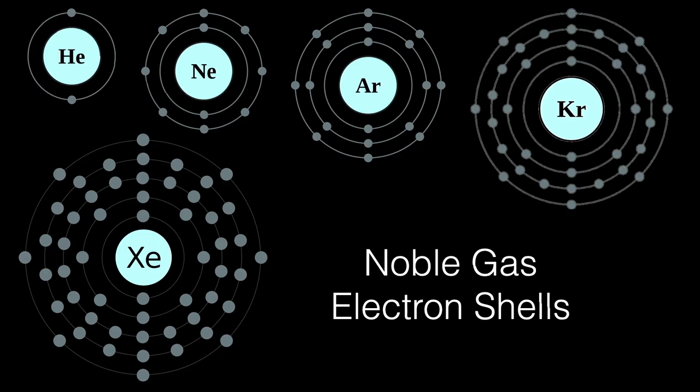That outer shell can't accept another electron from some other atom to bond with it, nor does it want to give an electron to another atom to form a compound. The first and only shell of helium is complete when it's filled with only two electrons.